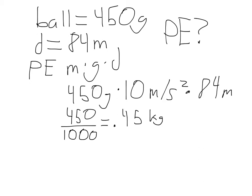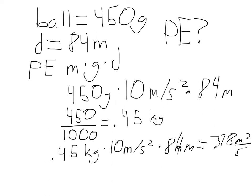So now that we've done that, we can go ahead and do the rest of the problem. So 0.45 kilograms times 10 meters per second squared times 84 meters equals 378 meters squared over second squared, which is joules.